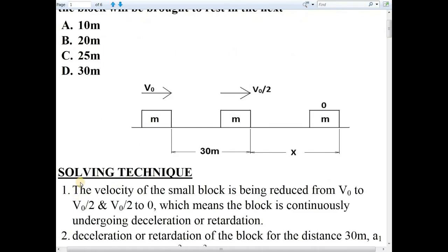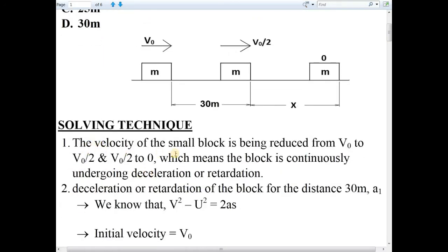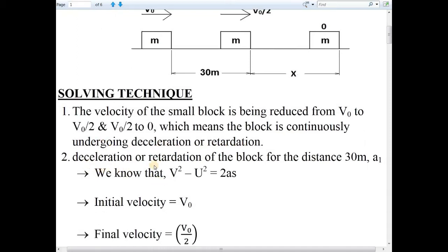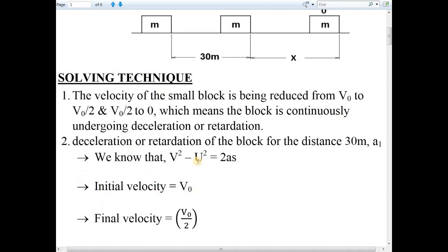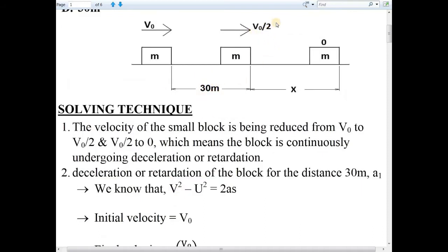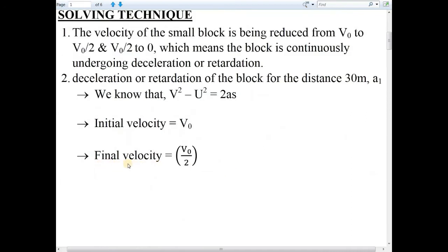Now I will move to the solving technique. The velocity of the small block is reduced from V0 to V0/2, and V0/2 to 0, which means the small block is continuously undergoing deceleration or retardation. We will find the value of deceleration or retardation of the small block for the 30 meter distance, and the term used for this deceleration is A1. For this 30 meter condition, the initial velocity is V0 and, after 30 meters, the final velocity is V0/2.